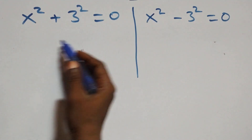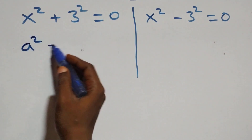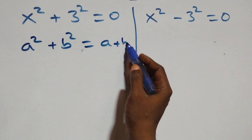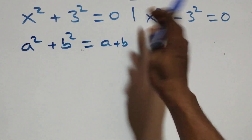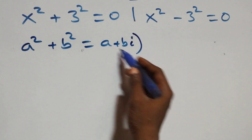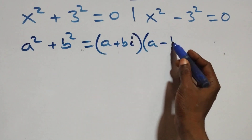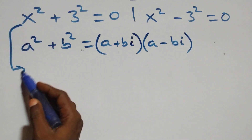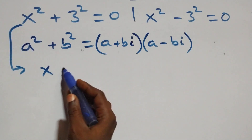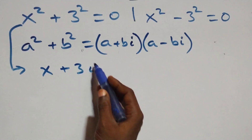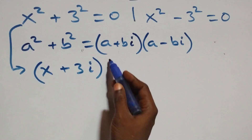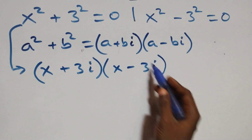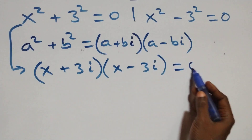On this side, this follows when we have a squared plus b squared, which is the same thing as (a + bi)(a − bi). That is, what we have here becomes (x + 3i)(x − 3i) equals to 0.